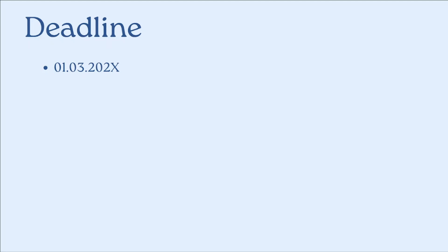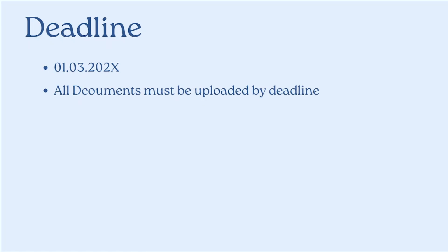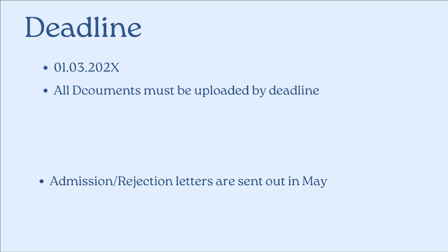The deadline for winter semester 2024–2025 is 1st March 2024, and by this deadline you must upload all your documents on the application portal of RWTH Aachen. Once you have submitted your online application, the next step is to wait, as admission or rejection letters will be sent out in May.